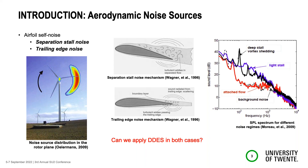The ambition was initially to see if we can apply DES for the trailing edge noise mechanism. So far it seems a bit difficult, because the main noise contribution mechanism is happening on the surface, on the boundary layer when we talk about trailing edge, and you need really accurate resolution for that. But when you have a massive separation, the real noise contributing mechanism is happening away from the surface, which is suitable for DES.